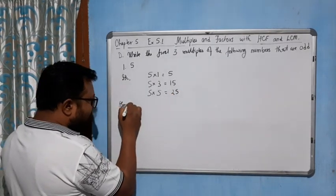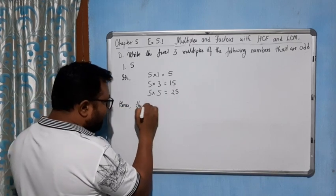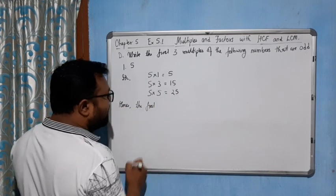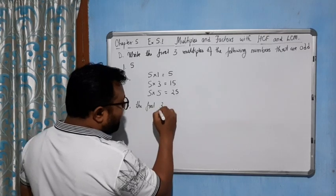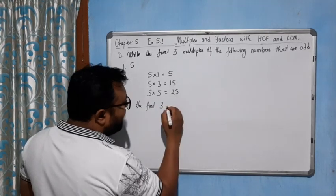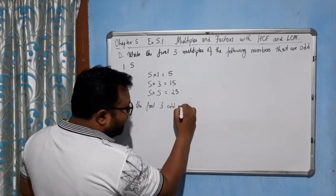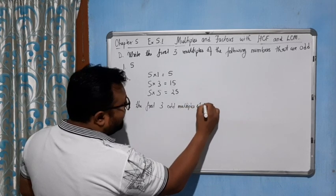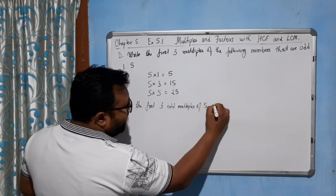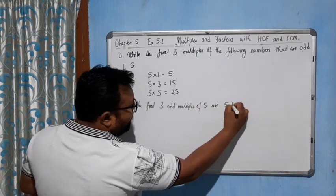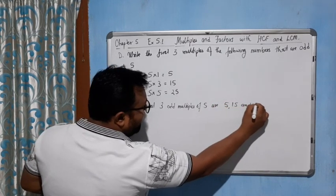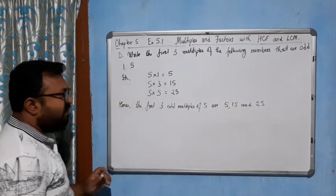Hence, the first three odd multiples of 5 are 5, 15, and 25.